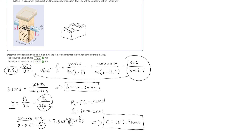To recap: we used the factor of safety formula to find dimension b by looking at the cross-sectional area. Then we used the double shear formula along with the ultimate shearing strength of the wood to find dimension c. That's it for this problem.